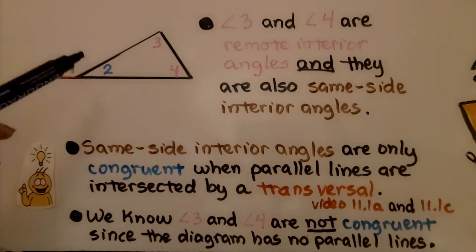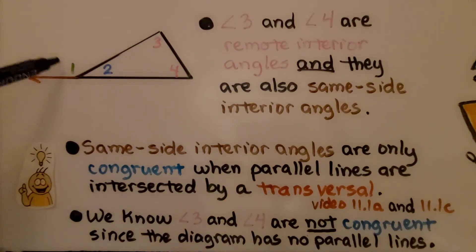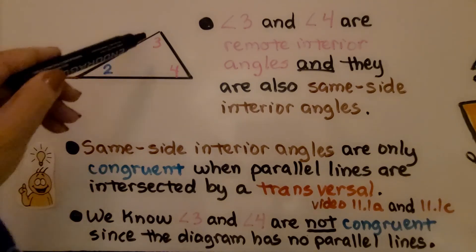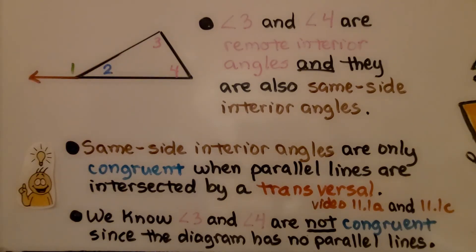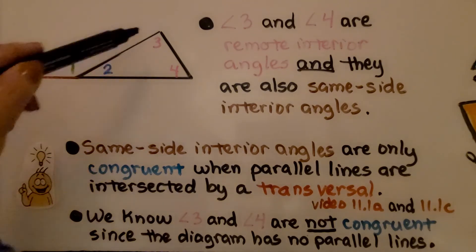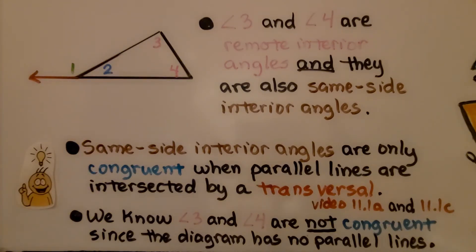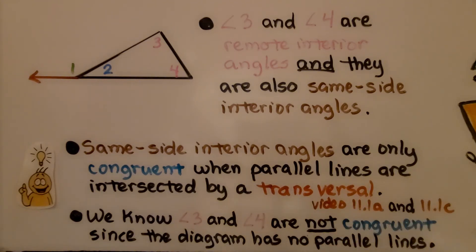Here we have a triangle with angles two, three, and four, and we can see the exterior angle is angle one. Angle three and angle four are remote interior angles. They are also same-side interior angles — they're on the same side. Same-side interior angles are only congruent when parallel lines are intersected by a transversal, as we learned in videos 11.1a and 11.1c — links are in the description. So we know angle three and angle four are not congruent since the diagram has no parallel lines.